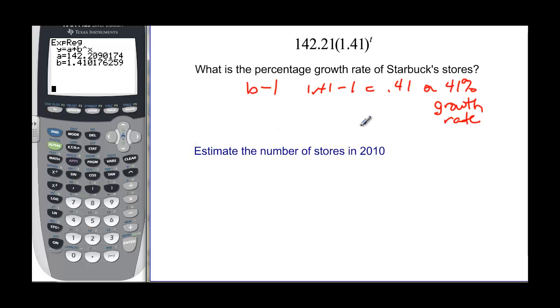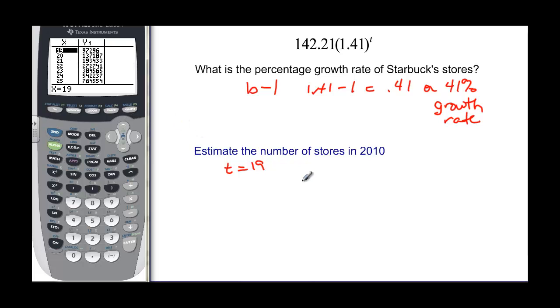So now we want to estimate the number of stores in 2010. Well, that tells me that t, we started in 1991. So t is going to be 19. So now I just have to plug and chug. And I'm going to go to my calculator to tell it, let my table do the plug and chug for me. So I'm going to start at 19. I've already put my equation in there. So I have 97,296 stores.